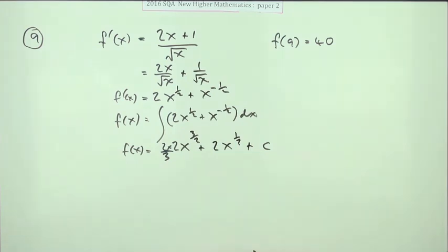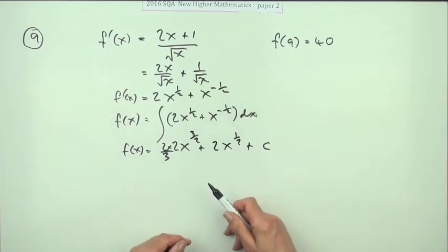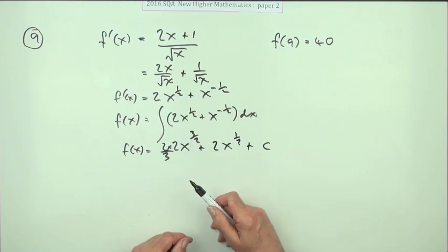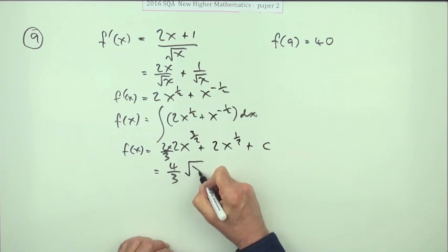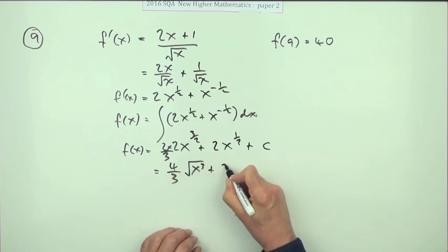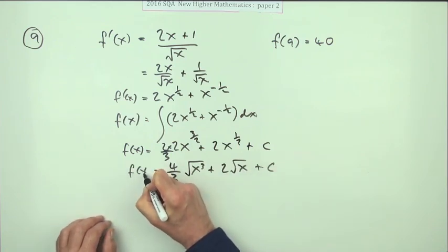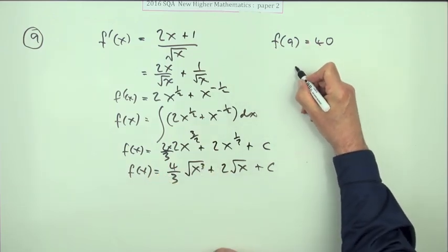So there we go, that's the answer to the integral. Now to find C, I'll pop those numbers in. The thing is, there's some calculation to be done and it is a calculator paper, so you're probably inclined to just leave it as power three upon two because you can just type that in. But I think I'm going to write this back the way it was: four upon three times the square root of x cubed, and that's plus two times the square root of x plus C.